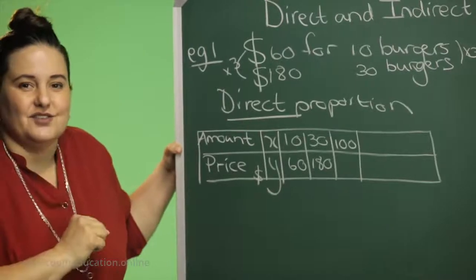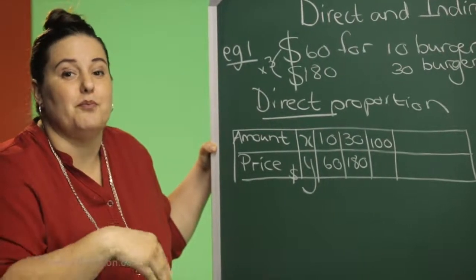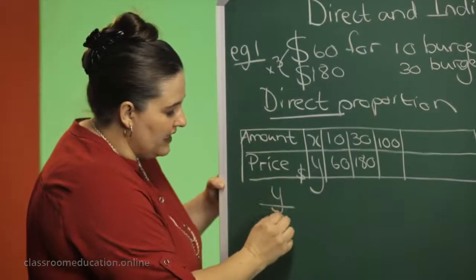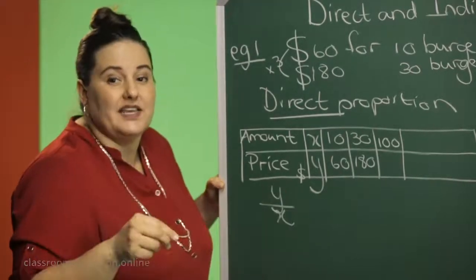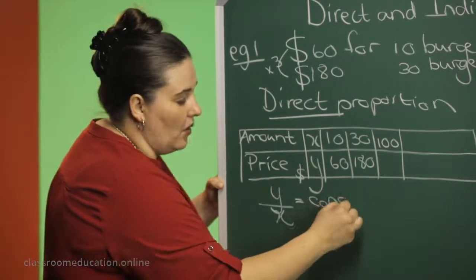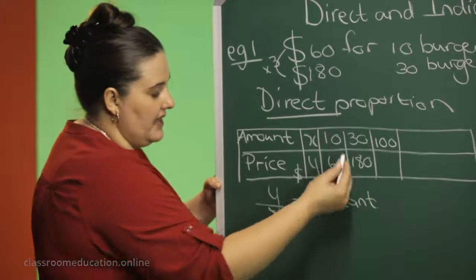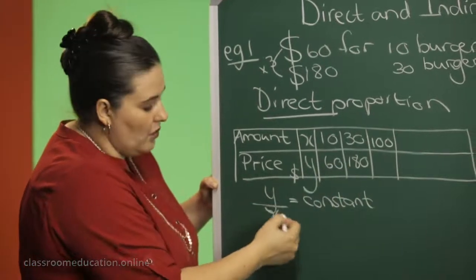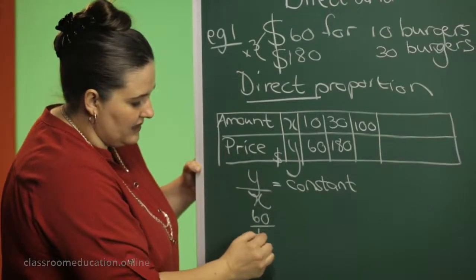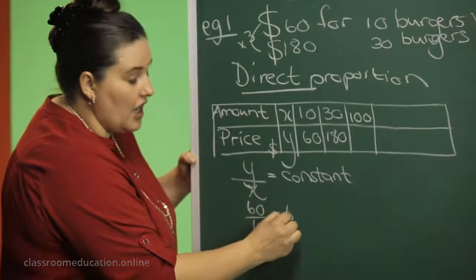Boys and girls, if we are working with direct proportion, then it means that your Y value divided by your X value will give a constant value. It must be the same in all cases. So if I say now, let's determine the Y divided by the X, so it will be 60 divided by 10, will give me an answer of 6.